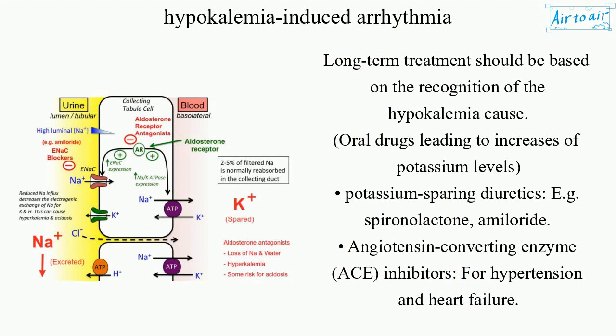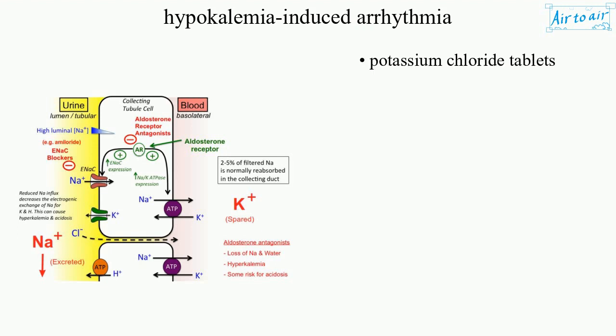Potassium-sparing diuretics, e.g. spironolactone and amiloride. Angiotensin-converting enzyme (ACE) inhibitors for hypertension and heart failure. Potassium chloride tablets.